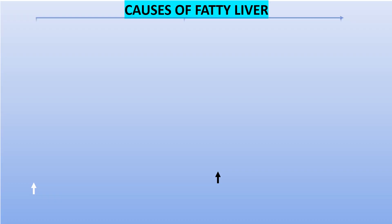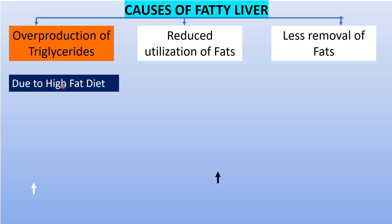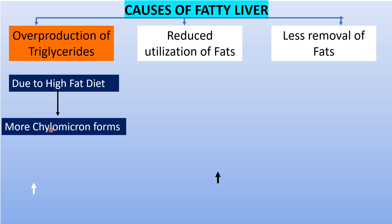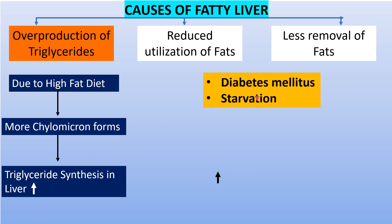Causes of fatty liver. There are three main causes: first, overproduction of triglycerides; second, reduced utilization of fats; and third, less removal of fat from the liver. For the first cause, whenever we intake a high fat diet, it causes more formation of chylomicrons, which have more triglyceride content and are transported to the liver. If the liver does not metabolize these triglycerides, they accumulate and cause fatty liver.